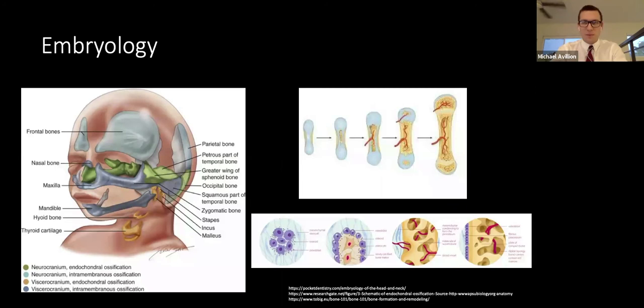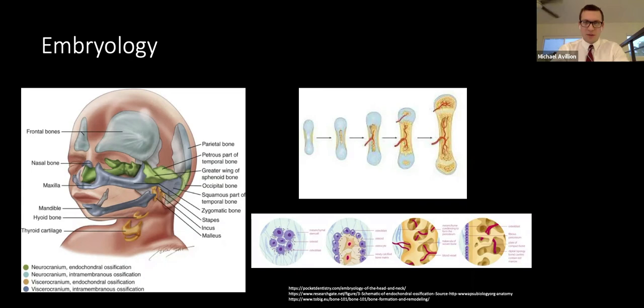The neurocranium surrounds and protects the brain. It's divided into the cranial base, shown in green, and the cranial vault, shown in light blue. The viscerocranium comprises the facial skeleton. The cranial base, consisting of the ethmoid, sphenoid, petrous, mastoid, and occipital bones, is formed by endochondral ossification — a process whereby chondrocytes form a cartilaginous model of future bone, with osteoblasts gradually replacing cartilage.